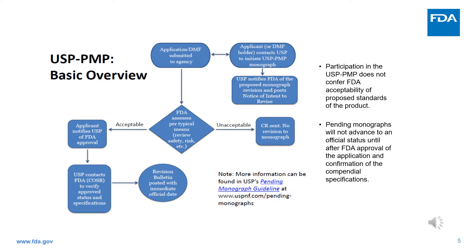So how does the USP PMP work? The DMF holder should file the application and contact the USP for initiation of the USP PMP at about the same time. USP will then notify FDA of the proposed monograph and post notice of intent to revise. FDA reviewers assess the submission as per the regular process. If the submission is unacceptable, a complete response is sent to the firm. If the submission is acceptable, the applicant should notify USP of FDA's approval. USP then contacts FDA to verify the approved status and specifications.